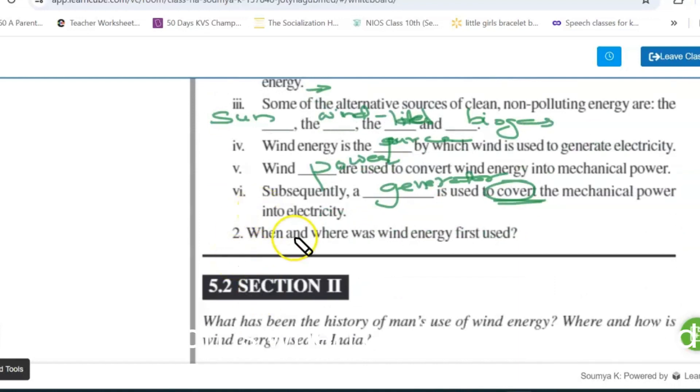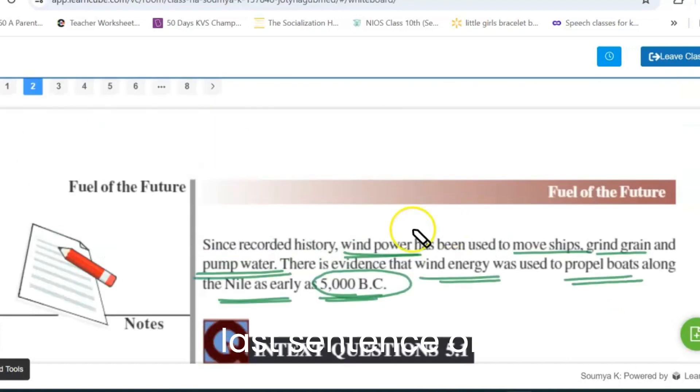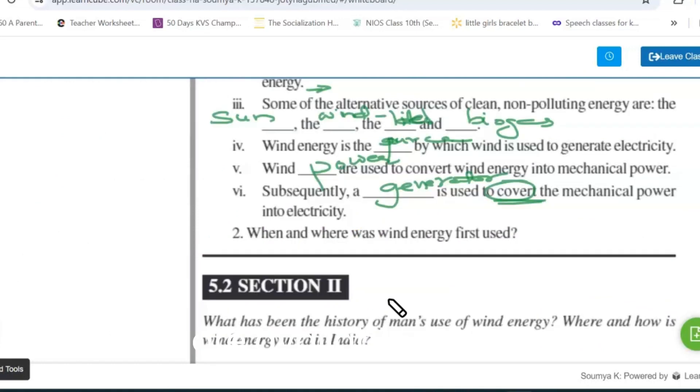Next question is, when and where was wind energy first used? Wind energy was used to propel boats along the Nile as early as 5000 BC, which is given as the last sentence which is available in section one itself. Do try it out, and if you have got doubts, do comment. See you in the next video, thank you for watching.